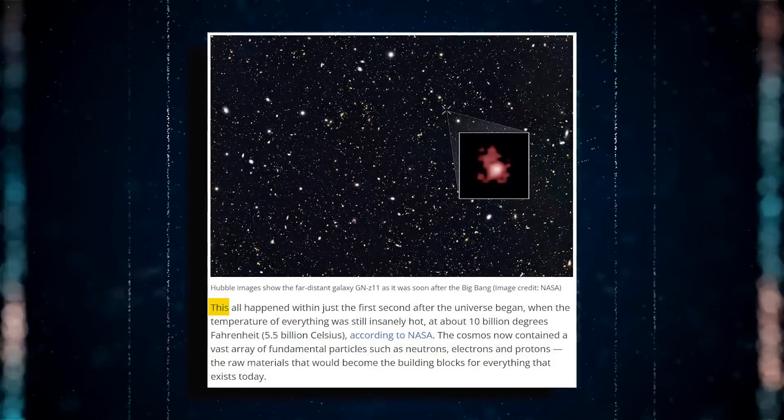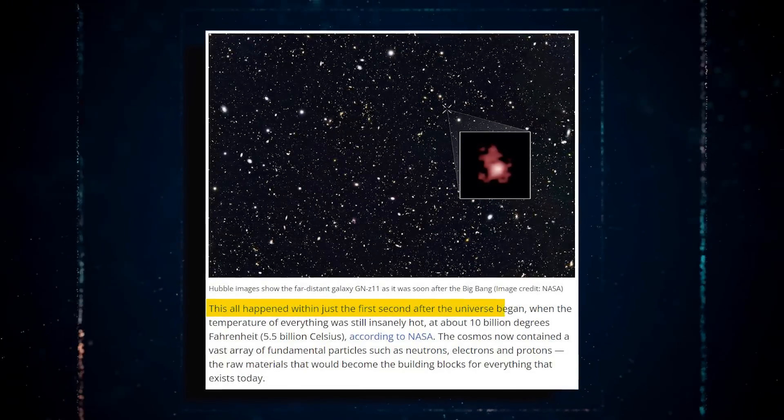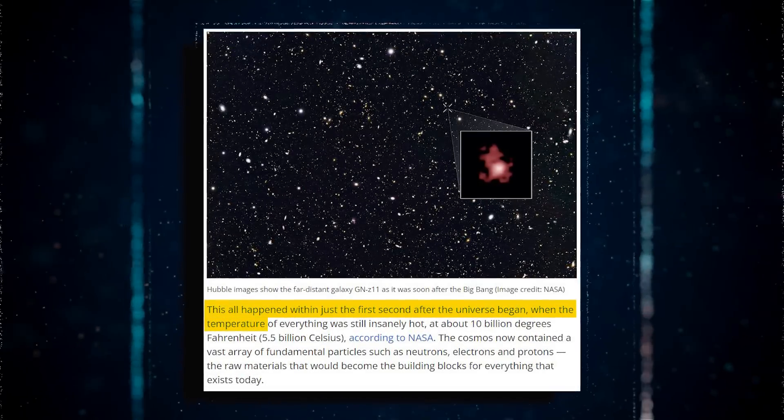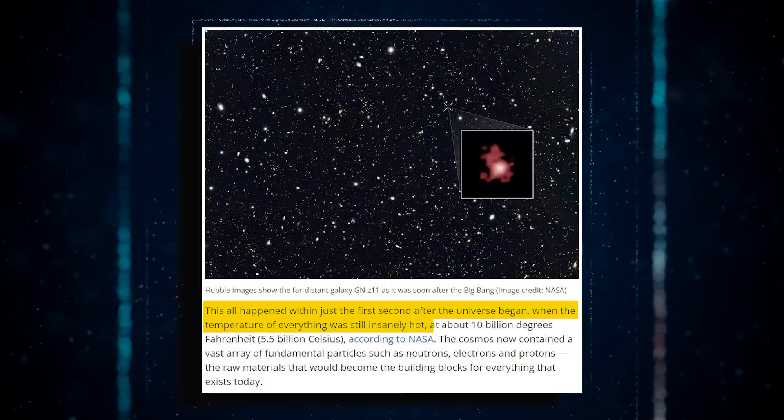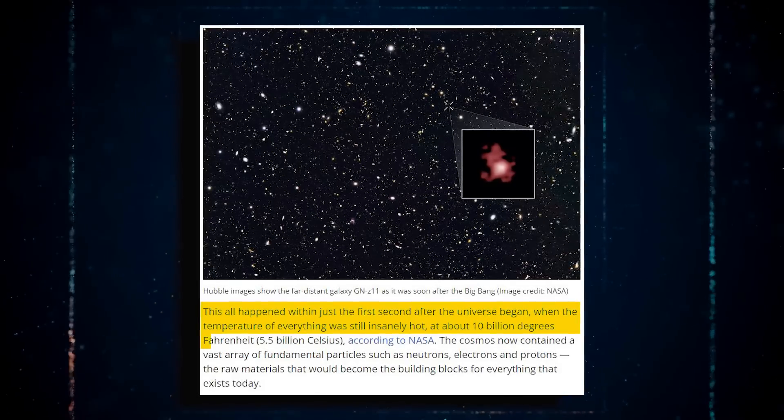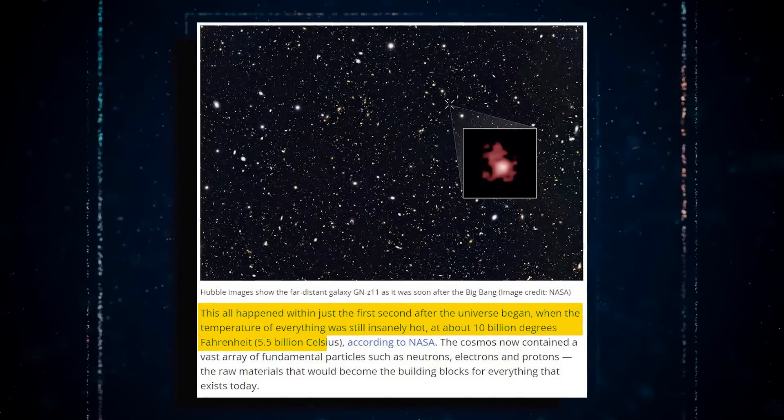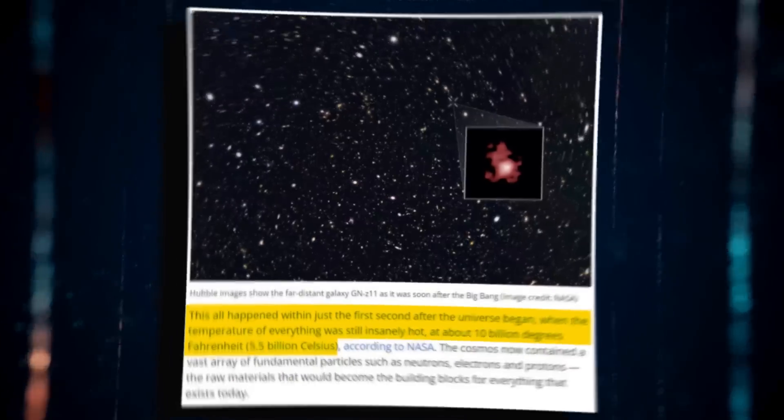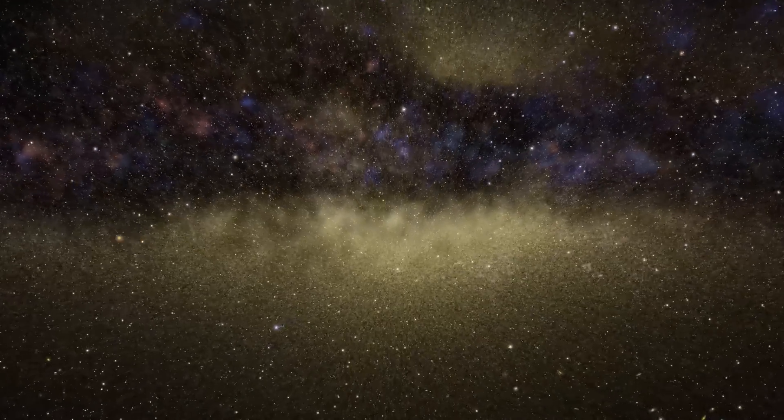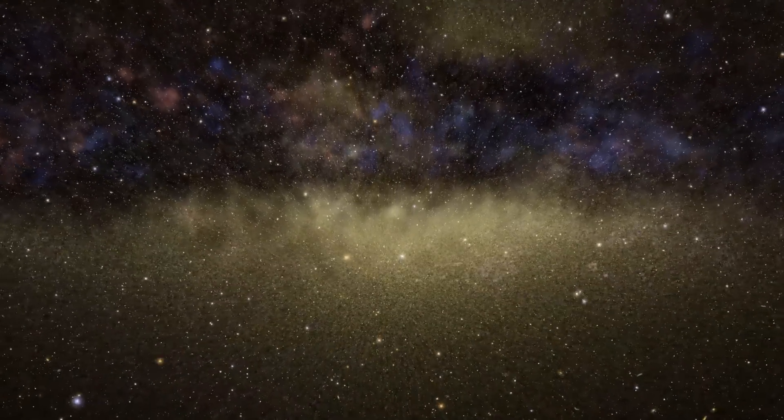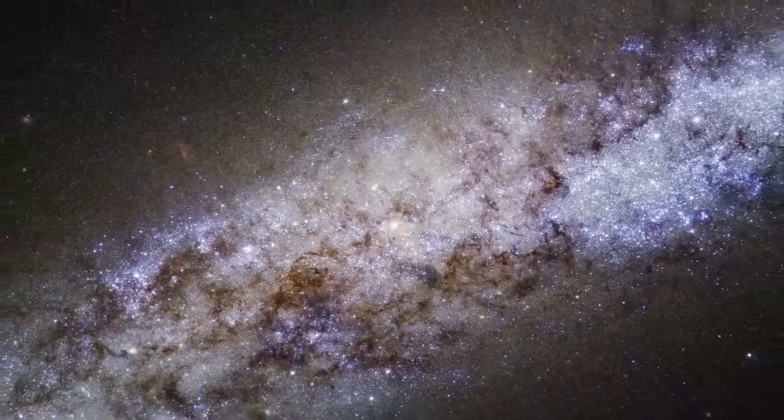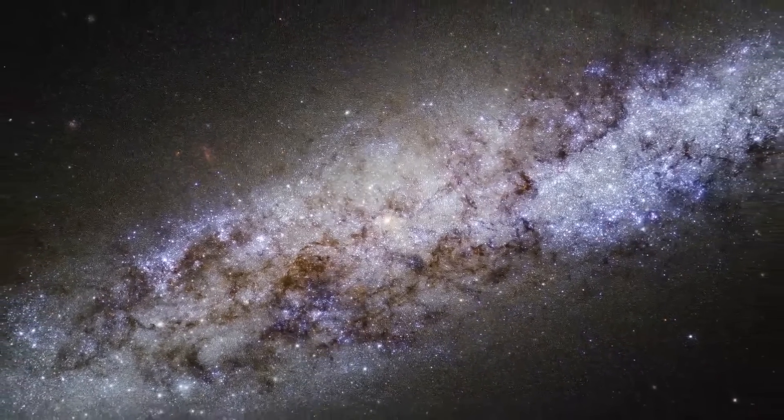According to NASA, this all happened during the first second after the universe began, when the temperature of everything was still incredibly hot at around 10 billion degrees Fahrenheit, 5.5 billion degrees Celsius. The universe now included a broad array of fundamental particles, including neutrons, electrons, and protons, the raw ingredients that would become the building blocks for everything we know today.